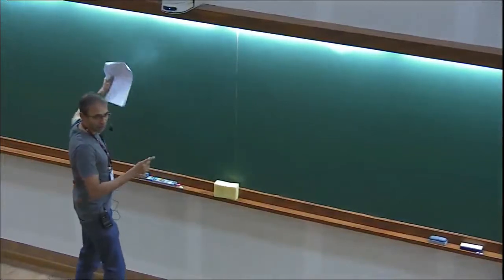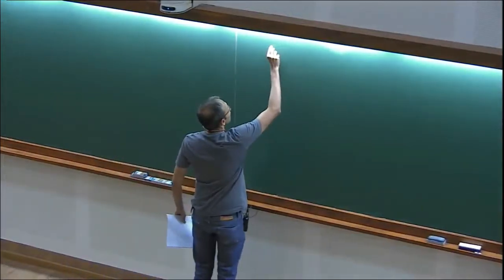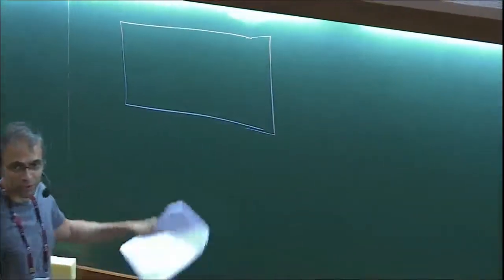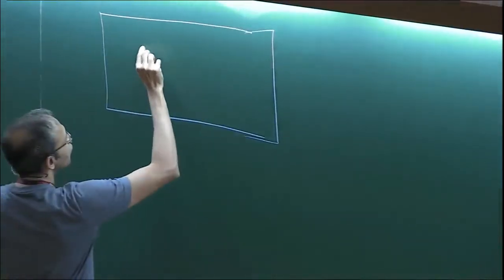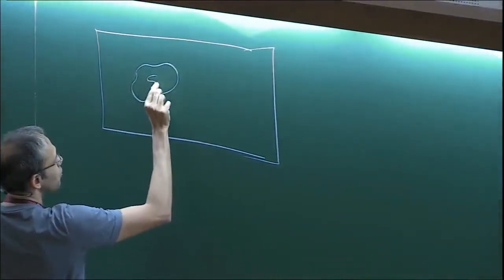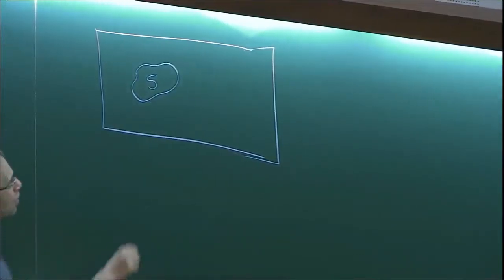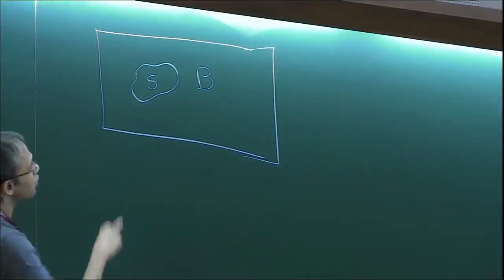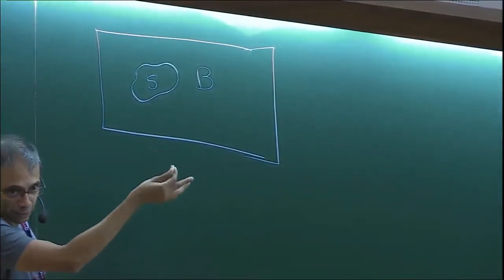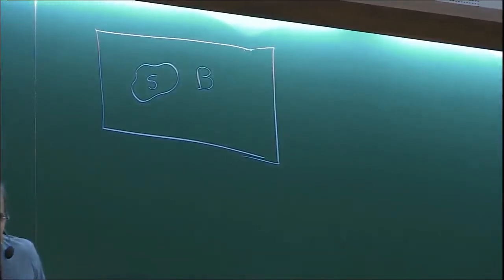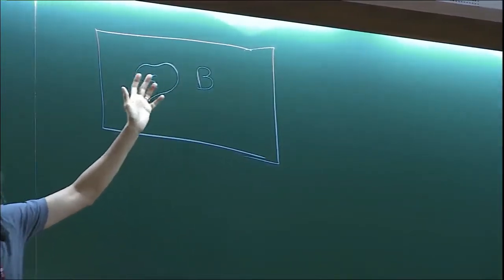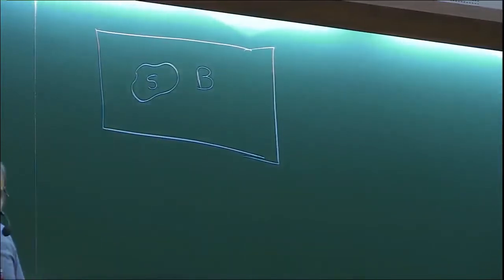What we have in mind is a system — this box — and some partitioning of the system into a subsystem and the rest of the system, which I'm going to refer to as a bath. So the system is divided into a subsystem and a bath. The subsystem has its own Hilbert space, the bath has its own Hilbert space. We're partitioning the degrees of freedom of the whole system into some which belong to the subsystem and the rest which belong to the bath.